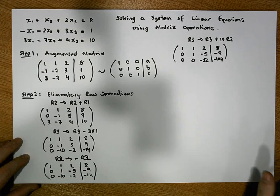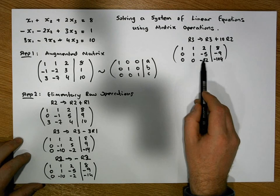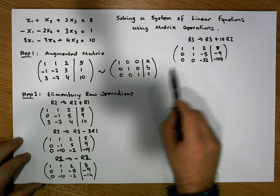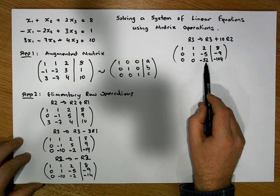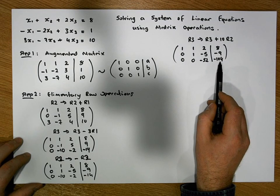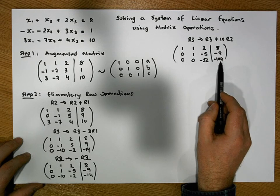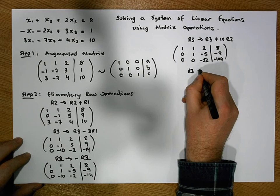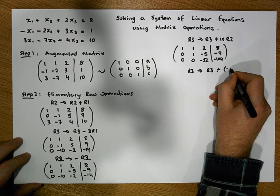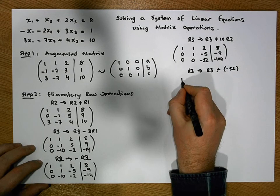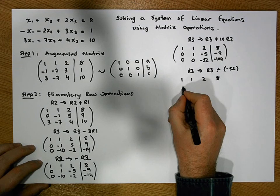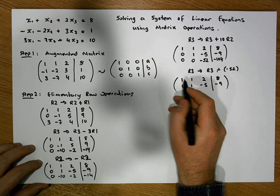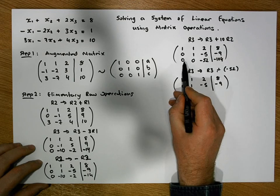We're nearly there. We proceed to make the third entry on the third row a 1. There's a relationship between -52 and -104 — a factor of -52. So we divide row 3 by -52: row 3 becomes row 3 divided by -52. Rows 1 and 2 remain: 1,1,2,8 and 0,1,-5,-9. Row 3's first entry: 0 divided by -52.